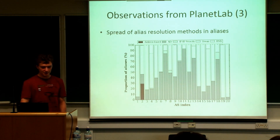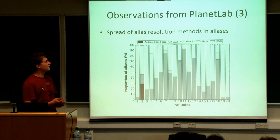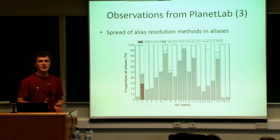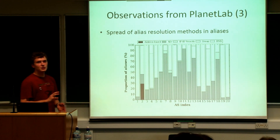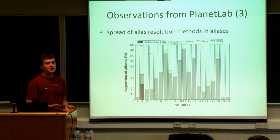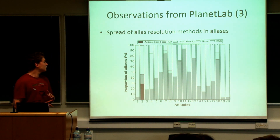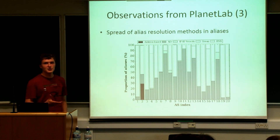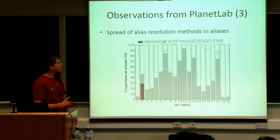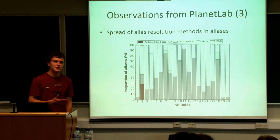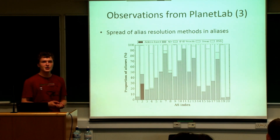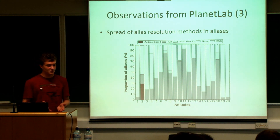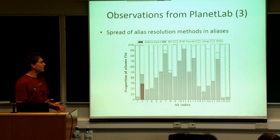Another result from this measurement is the spread of alias resolution methods across our aliases. The two main categories that work are IPID-based techniques and reverse DNS combined with grouping of similar fingerprints. This shows we cannot exclusively rely on IPID-based techniques. The address-based iFinder method was not very successful overall — it only worked for one particular AS — but in that AS it accounted for approximately 30% of aliases. Since it is cheap and easy to implement, you should always consider it, especially if you can get past transit filtering.